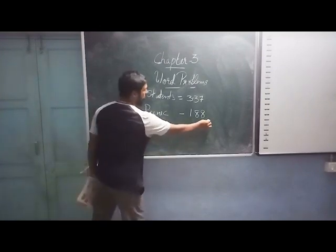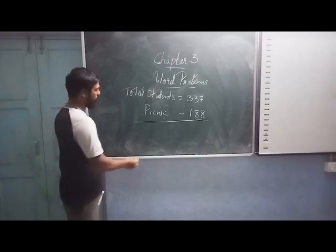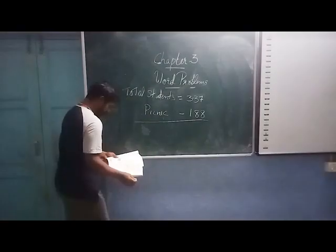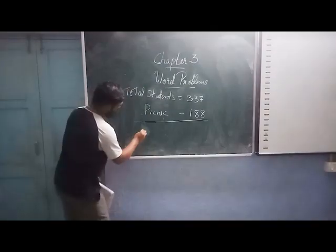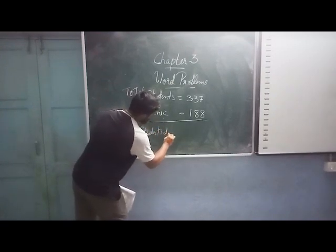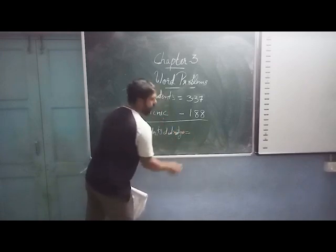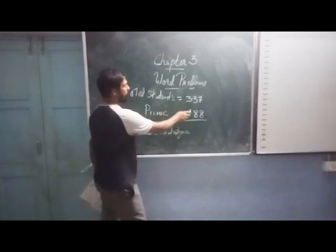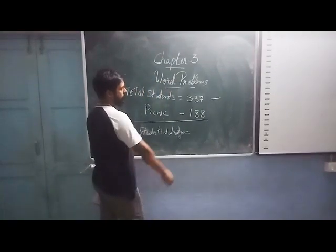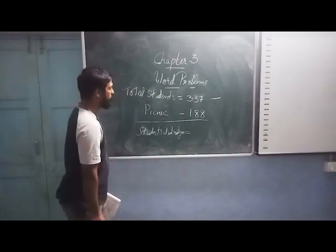Now our question is: how many students did not go? How many stayed back? The balanced students who did not go — which operation do we use? We have to use subtraction. So we have to subtract 188 from 337. How do we do it?